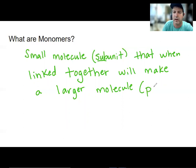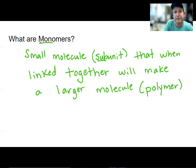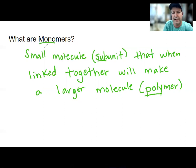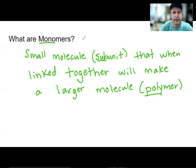We are going to call those larger molecules polymers. The prefix mono is going to mean one, and poly is going to mean many. So many of these smaller molecules linked together will make a polymer.